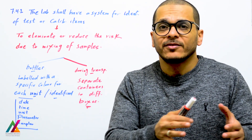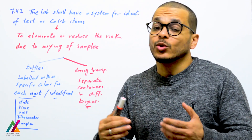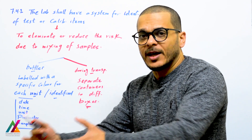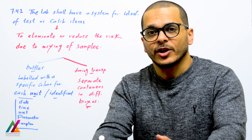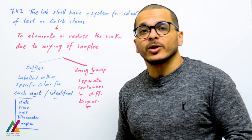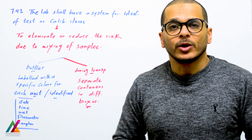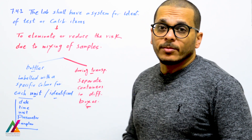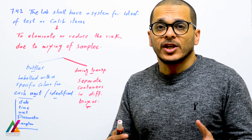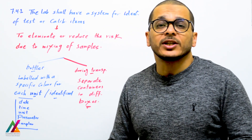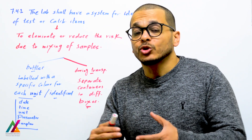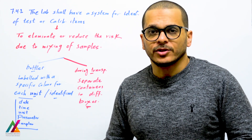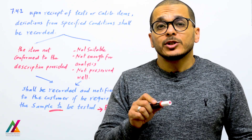You will separate the containers into different boxes during transportation, so it is easy to bring the correct bottles to the organic, inorganic, and microbiology labs respectively. This identification system — labeling bottles and separating them into different boxes — shall all be mentioned in the procedure.